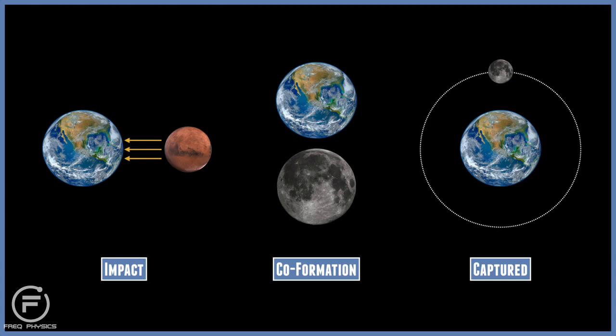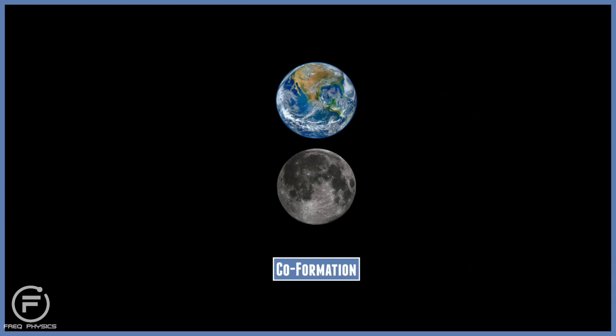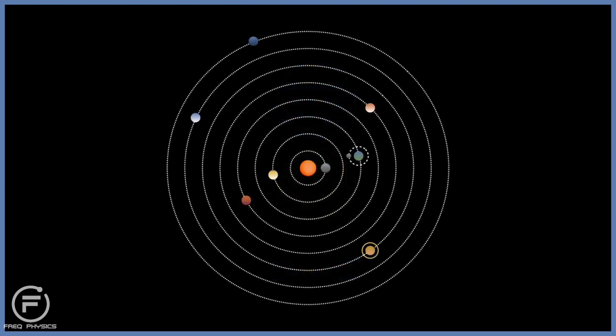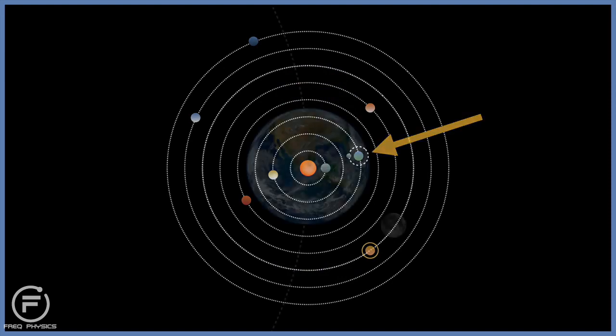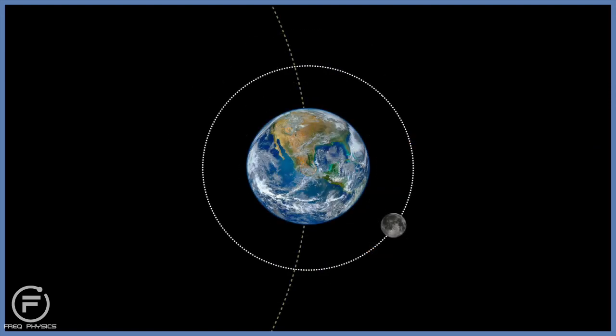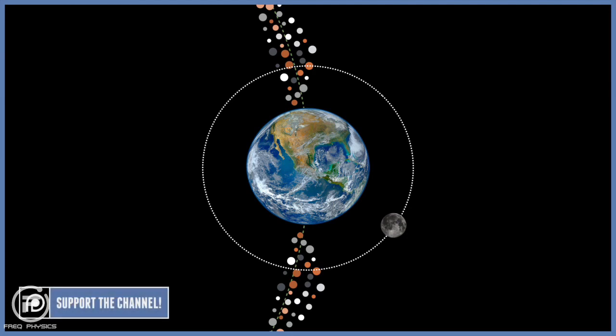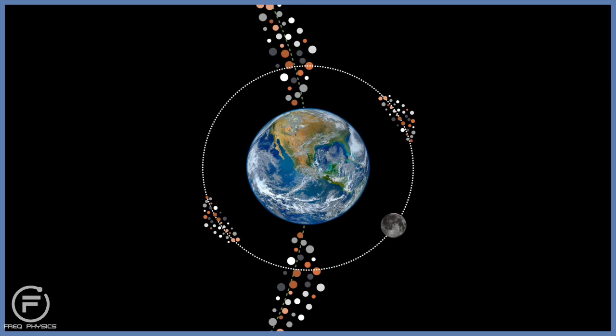The second one is the co-formation theory. Moons can often form at the same time as their parent planet. The material in the early solar system would have drawn together through gravity. The formation of the moon would have formed at the same time as the formation of the earth, and because it would have formed in the same place, it would have been made of the same material.